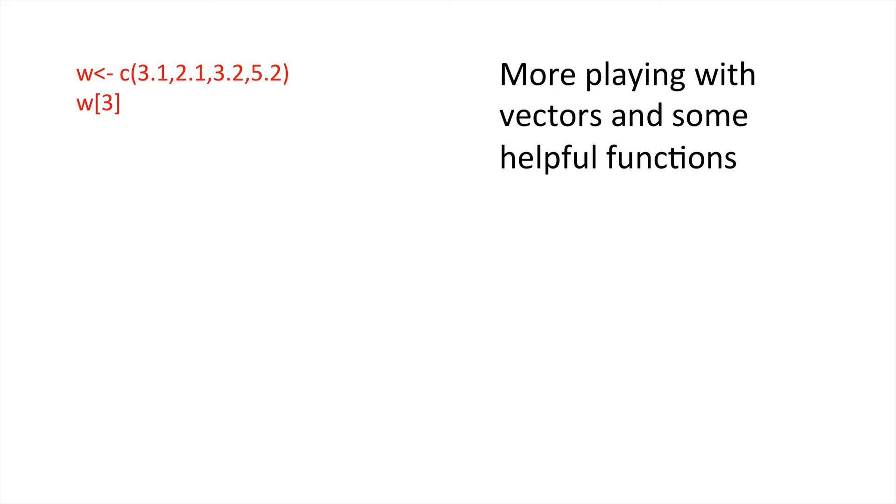So, let's play some more with vectors. Let's define the vector w as a collection of numbers using the concatenate function. If we ask, then, what w square brackets 3 is, we're asking what the third element of that vector w is. And in this case, it's 3.2. We can write code all on the single line if we use a semicolon. So, we can ask what's the size of the minimum element in w. And what's the maximum size of the elements in w. And in this case, we get 2.1 and 5.2. We can ask R to sort that vector. The default is from the smallest to the lowest. And this is what we get here.